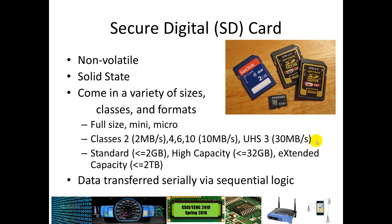There's also a UHS class — ultra high speed — which allows up to 30 megabytes per second, good for high definition video. SD cards also have various capacities. In the old days you could only store up to 2 gigabytes. Then came SDHC, good for storing video, with capacity up to 32 gigabytes. And now extended capacity SDXC allows you to store up to 2 terabytes on an SD card. SD cards are similar to flash memory — a solid state type of memory where data is transferred serially, meaning one bit at a time, through a sequential circuit.